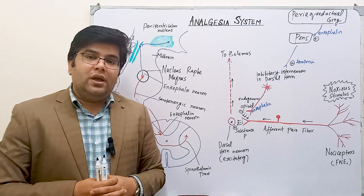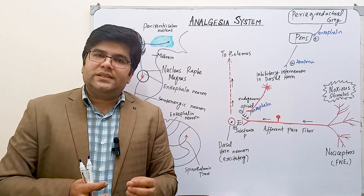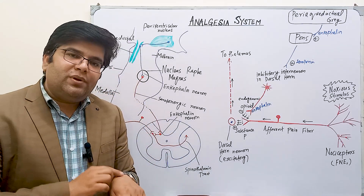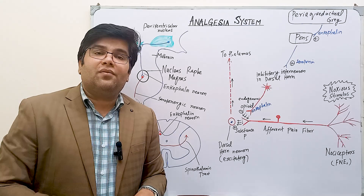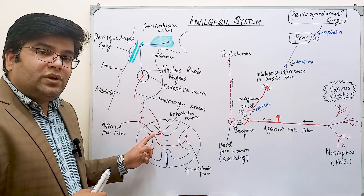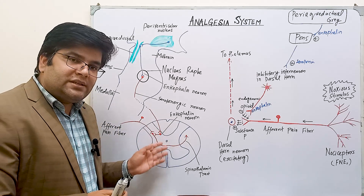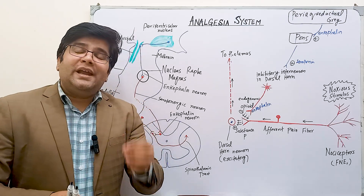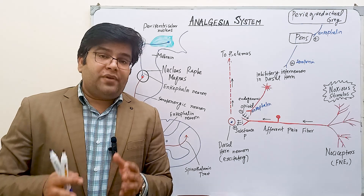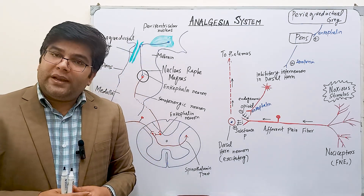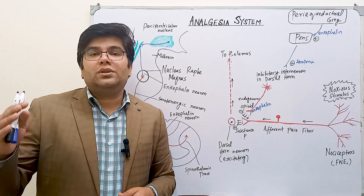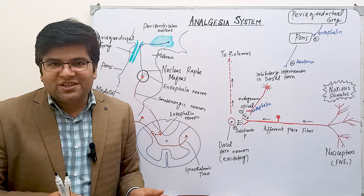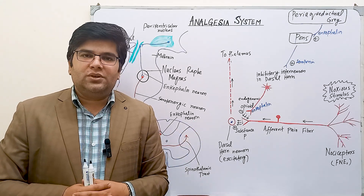The pain gate theory explains that when tactile nerve fibers are stimulated simultaneously with pain — for example during rubbing — the A-beta nerve fibers send collaterals that stimulate inhibitory interneurons, which inhibit the ascending pain signals from the spinal cord to the thalamus. This analgesia system is very interesting, and the opioid-like substances are very powerful painkillers — an important part of treatment for controlling severe pain. This is a very important exam topic. Thank you for watching.